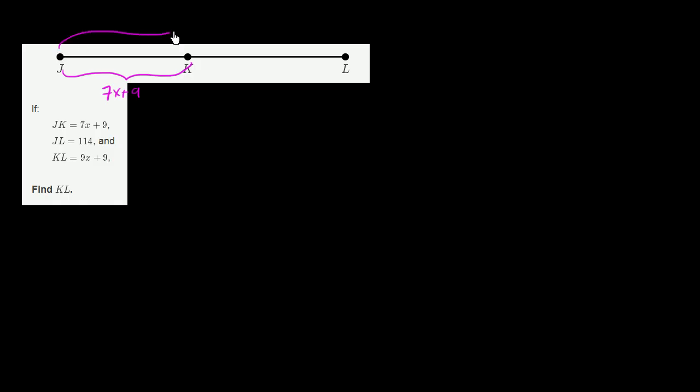Then they tell us that JL is equal to 114. So JL is the entire length of the segment. So this entire thing is equal to 114. And then they tell us that KL is equal to 9x plus 9. So this right over here is equal to 9x plus 9.